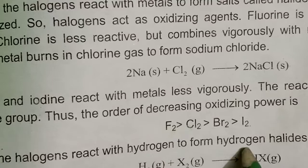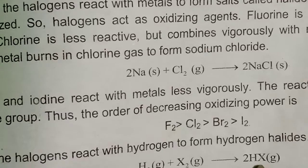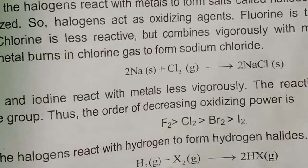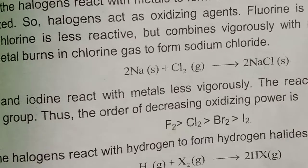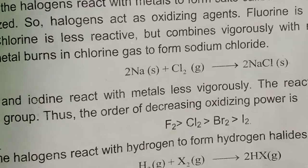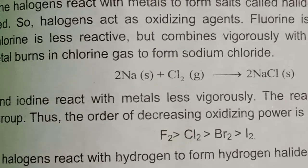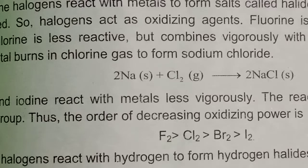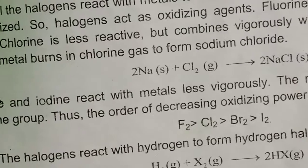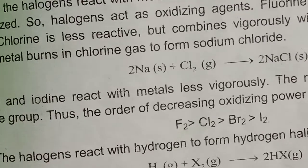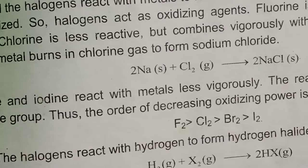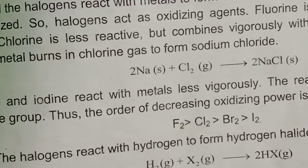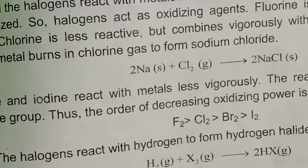Halogens react with hydrogen to form hydrogen halides. The reaction of fluorine with hydrogen is explosive. The hydrogen halide dissolves in water to form hydrohalic acid — for example, hydrochloric acid HCl and hydrofluoric acid HF. Except hydrogen fluoride, other hydrohalic acids are strong acids. The acid strength increases in a certain order.